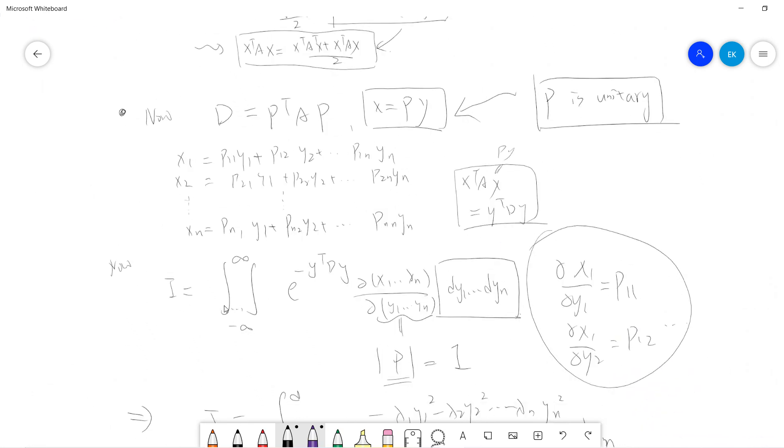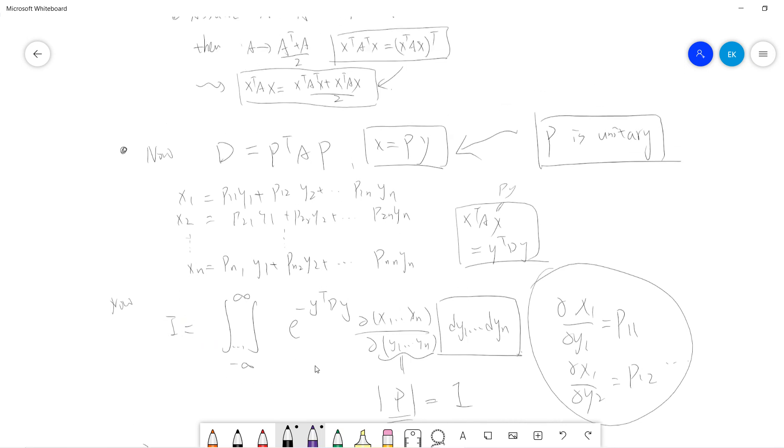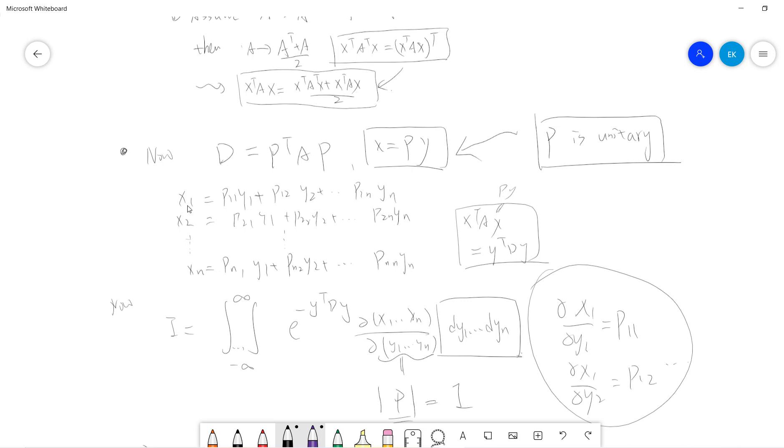So that means your original integral is the same, right? Because if all comes to infinity, then X1 can be infinity, and negative infinity, then X1 can be negative. So the integral is the same. And the XTAX becomes negative YTDY. Now these are diagonal matrices, and you need to type the Jacobian. So partial X1 to Xn, Y1 to Yn. So partial X1, Y1 will be P11. So this Jacobian will just be the determinant of this P matrix, and we saw that P is unitary, so determinant of P is 1. By the way, I use the absolute value to label determinant.